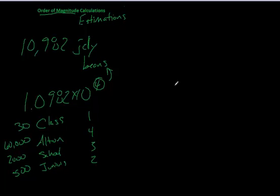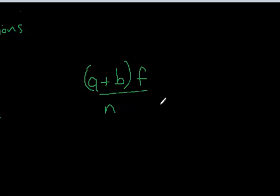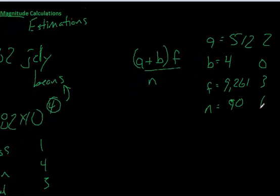So you might say, where might I use this? Let's say I had an equation like a plus b times f over n. Let's say a is going to be 512, b is going to be 4, f is going to be 9,261, and n is going to be 90. First thing you're going to do is look at the order of magnitude of each of your numbers. This is 2, 0, 3, and 1.